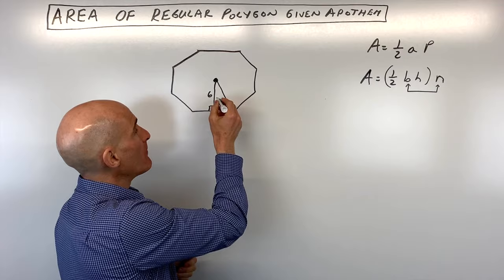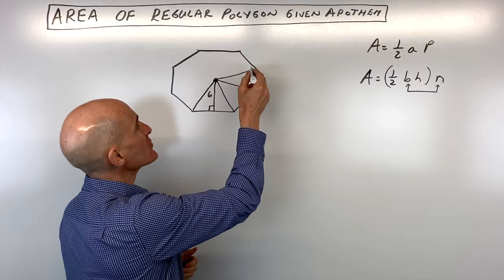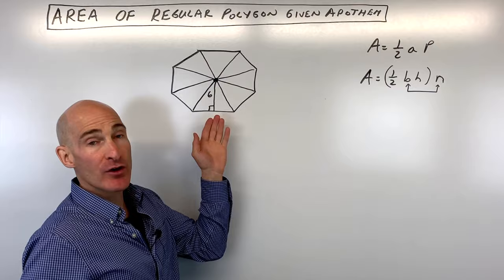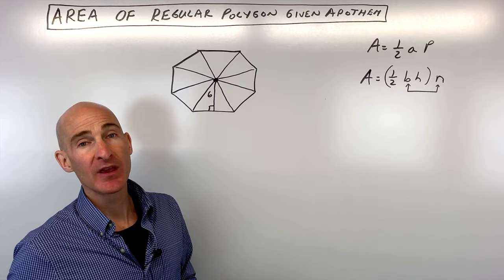Well, the first thing you want to do is divide up this polygon into triangles. All these triangles are going to be the same. They're congruent triangles. And what we can do is if we find the area of one of these triangles, we can multiply by how many triangles we have to find the total area.